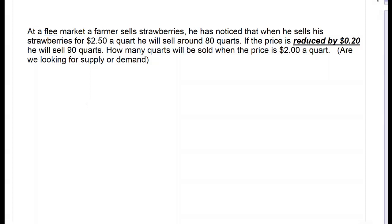Applications of our supply and demand function. The first example is a flea market where a farmer is going to sell strawberries. He's noticed that when he sells his strawberries for $2.50 a quart, he'll sell around 80 quarts. If he reduces his price by 20 cents, he'll then sell 90 quarts. How many quarts will be sold when the price is at $2 a quart?